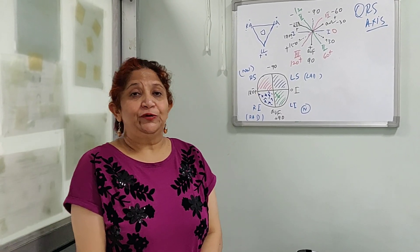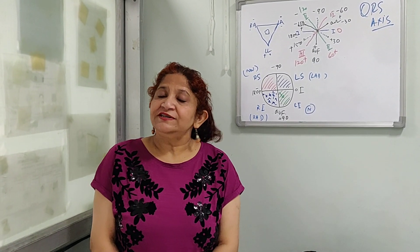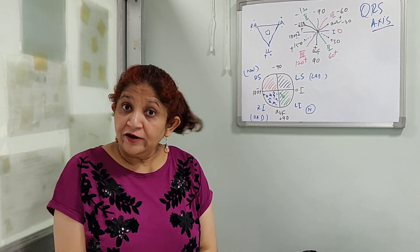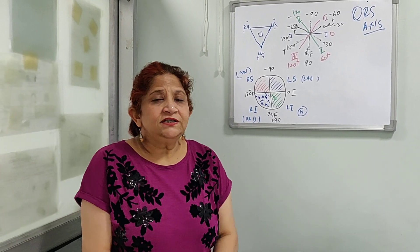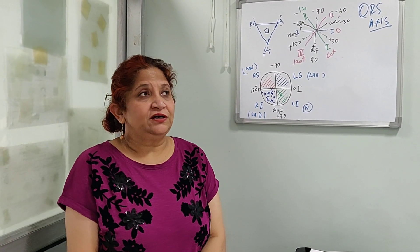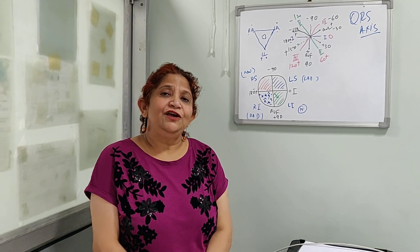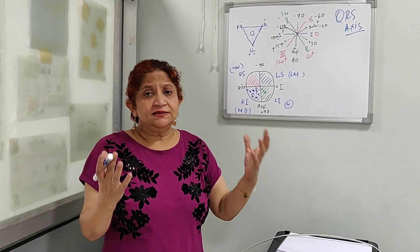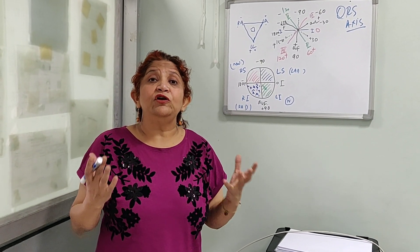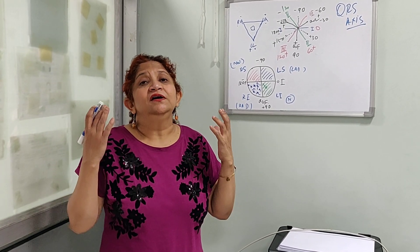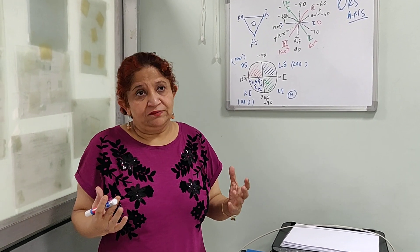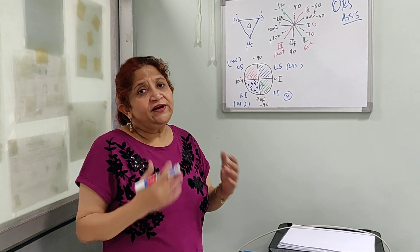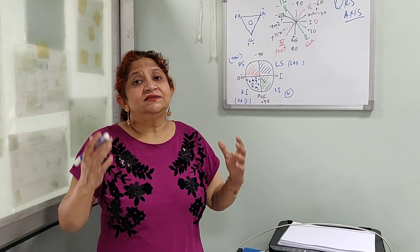Welcome to today's video. We are going to discuss electrical axis — that is, the QRS axis of the heart on electrocardiography. This is one of the most difficult subjects in ECG, but it is easy if you understand. We talk mainly of QRS because it represents ventricular depolarization, which is the major chunk of depolarization, as atrial depolarization and the T wave are both very small. So our whole interest lies in determining the QRS electrical axis.